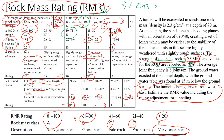Next is joint spacing. We're not given joint spacing directly, but we're told there are 8 joints per meter, so we can estimate the spacing. That will be 1 meter divided by 8 joints, giving roughly 0.125 meters. Looking up that value in the table, it falls in the range that gives a rating of 8.